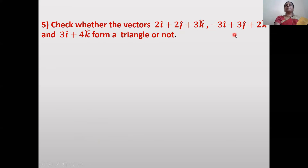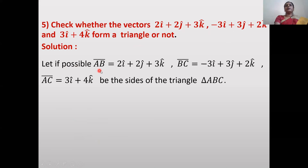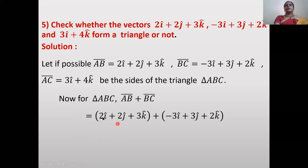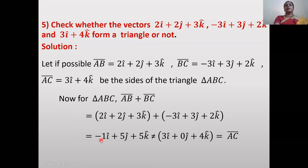Next problem: Check whether the vectors 2i + 2j + 3k, -3i + 3j + 2k, and 3i + 4k form a triangle or not. Let AB̄ = 2i + 2j + 3k, BC̄ = -3i + 3j + 2k, ĀC̄ = 3i + 4k be the sides of triangle ABC. Add AB̄ + BC̄ and simplify.